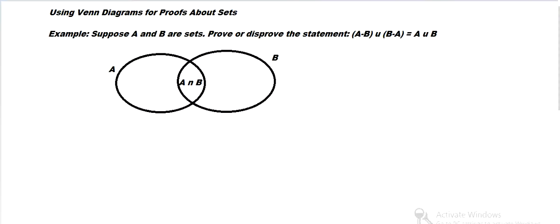And then, let's see, let's look at these parts. A minus B. That's everything in A that's not in B. So here is A minus B. This part here. And B minus A.